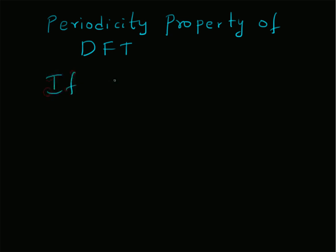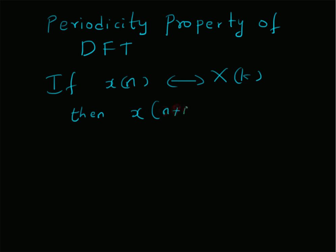That is, if the signal is given by x of n, its corresponding DFT is given by X of k. That is, x of n is a sequence of length N and X of k is the N-point DFT sequence of x of n. Then, x of n plus capital N, that is, shifting x of n by N points, will give x of n back. And similarly, in the frequency domain, capital X of k plus N will give capital X of k. That is, by shifting k by N points, we will get the value X of k back.